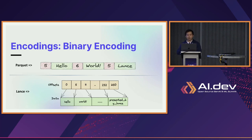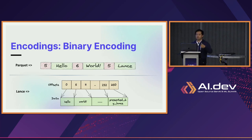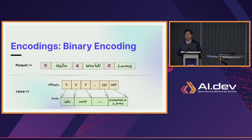With Lance, we separate the offsets and the data in the encoding so that, using the offsets, you can have constant-time access into that array and amortize the offset read time.